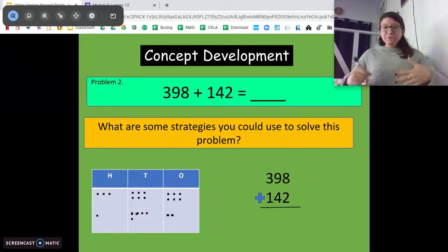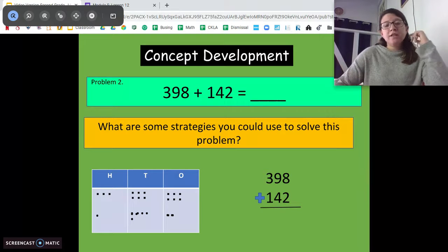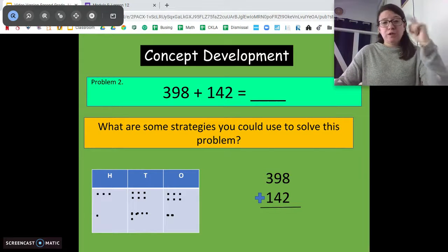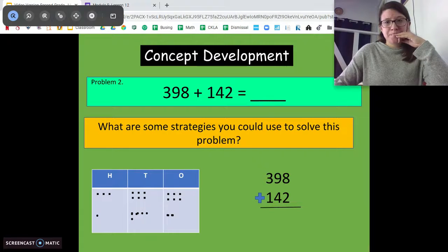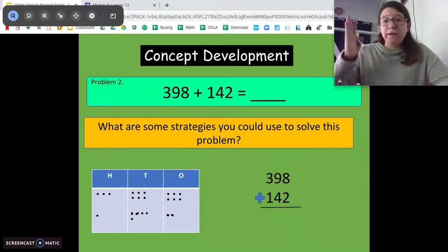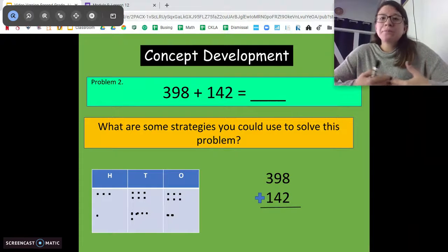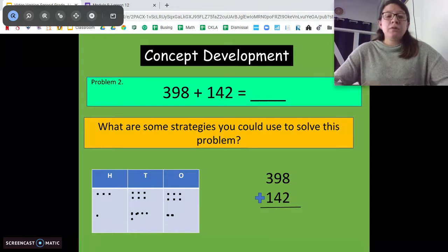Alright, let's do this next one. Same idea. We're going to solve it a couple different ways. So we have 398 plus 142. Pause and turn and talk. What are some strategies that you could use to solve this problem? So talk to someone at home about a strategy that you could use to solve this problem. Good. There's a couple different ways. You can see two on the screen right now. We have the vertical way and the drawing way. So like we did in lesson 10, we can do both of these at the same time. And it's a great way to check our work.